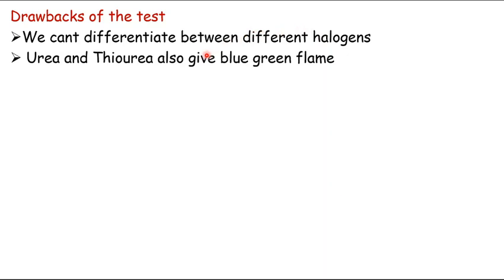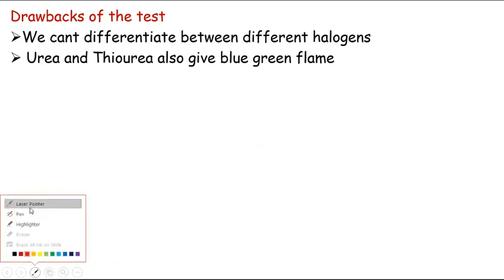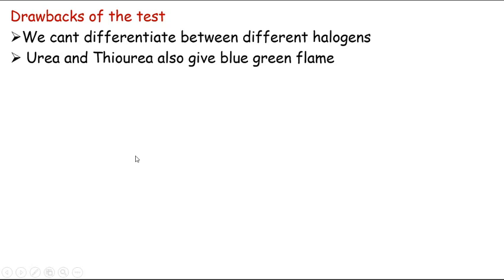Another important problem is that if your compound is urea or thiourea — a nitrogen-containing or sulfur-containing compound — you cannot differentiate between the halogen and these compounds giving a similar flame. So this test is somewhat ambiguous and is not a clear-cut definitive test for halogens.